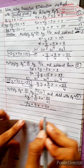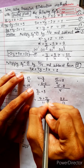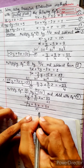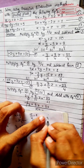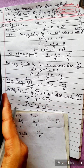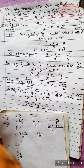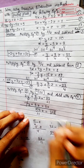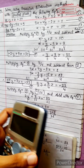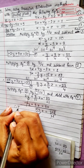Adding the two: the y terms cancel. For z: 7/11 plus 9 equals 7/11 plus 99/11 equals 106/11 z. Right-hand side: 31 minus 23/11 equals (341 minus 23)/11 equals 318/11. So 106/11 z equals 318/11, meaning z equals 318 divided by 106, which gives z equals 3.